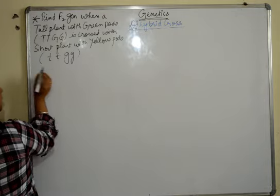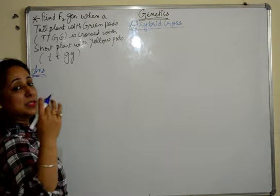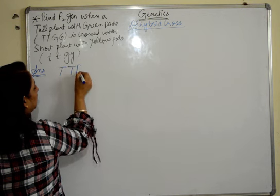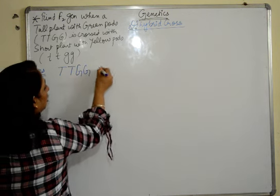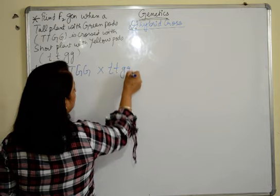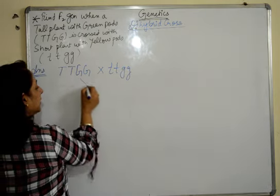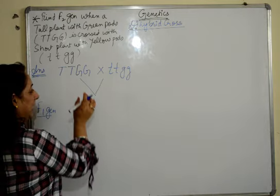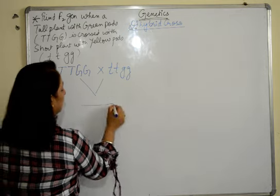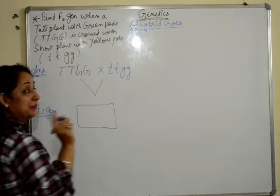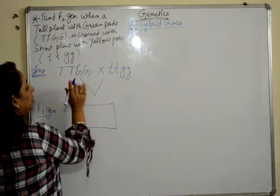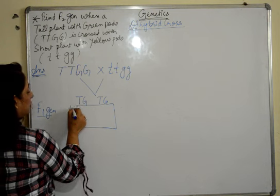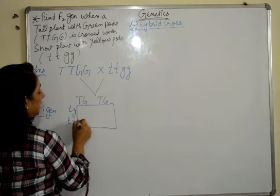How do we make it? We follow the same thing, the same as we did earlier. What is he saying? That this is crossed with this. Again the same thing. First, F1 generation we have to find. We will do the same again. One each we are going to take. We will make this checkerboard. But here is the difference. We are going to take one one each. TG, TG. Here also smalls, both.